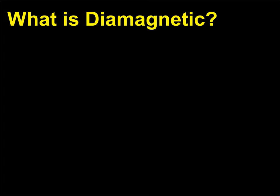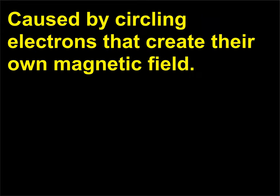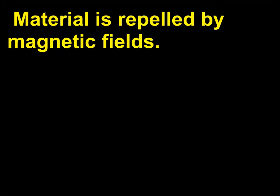What is diamagnetic? Caused by circling electrons that create their own magnetic field. Material is repelled by magnetic fields.